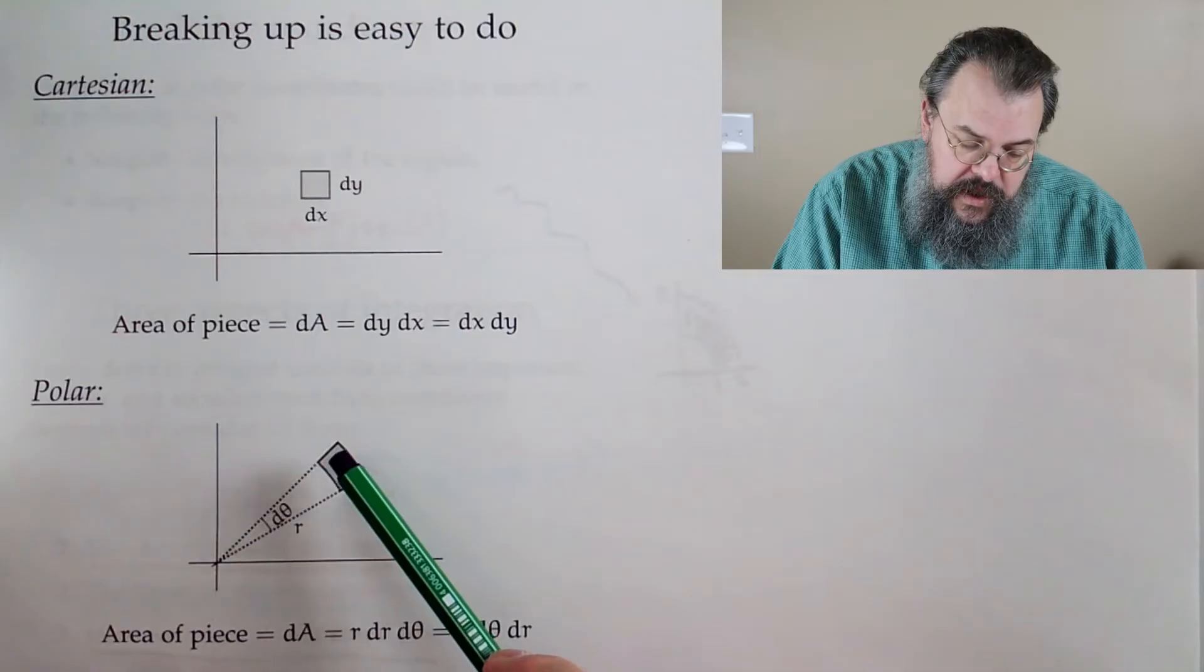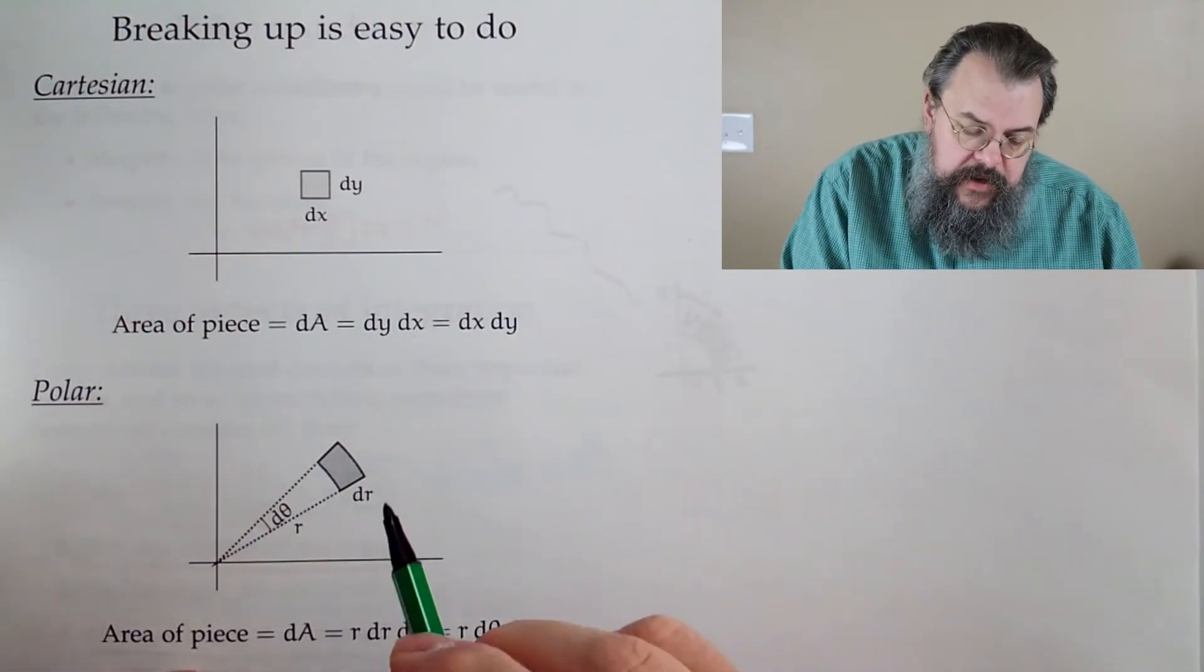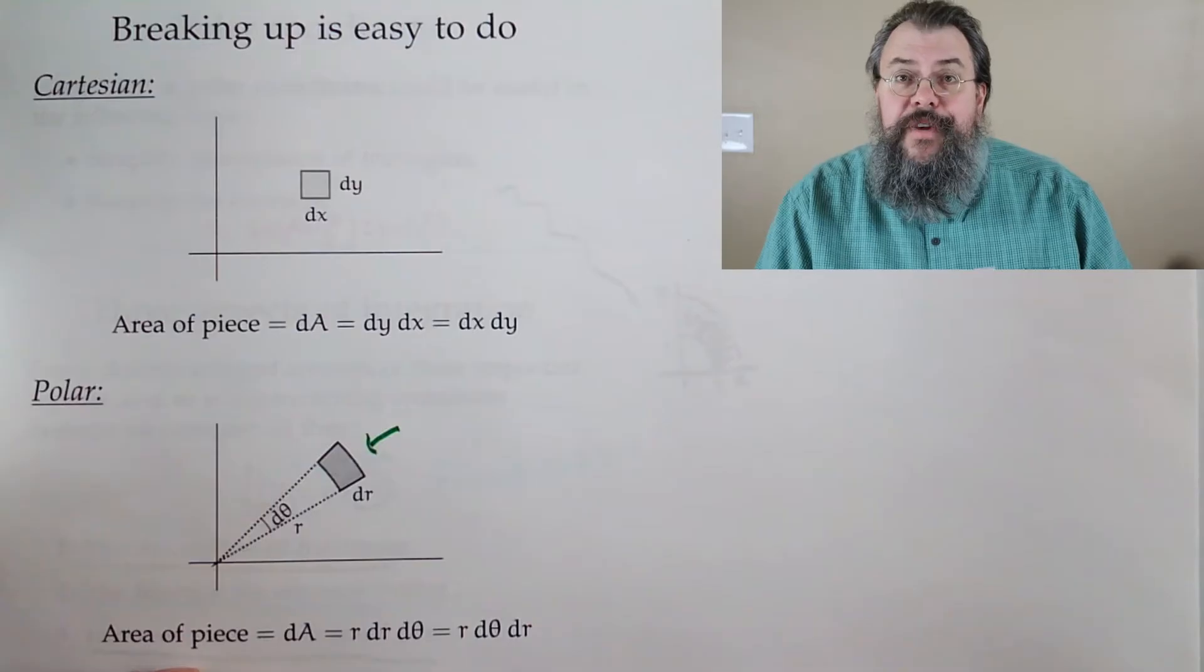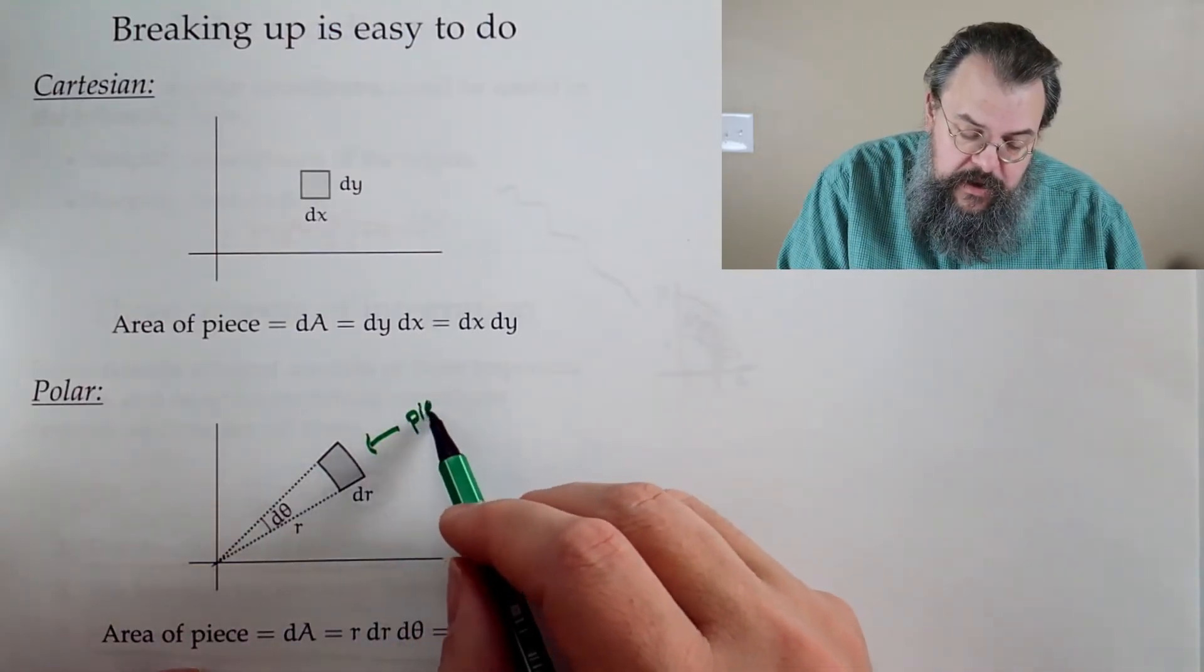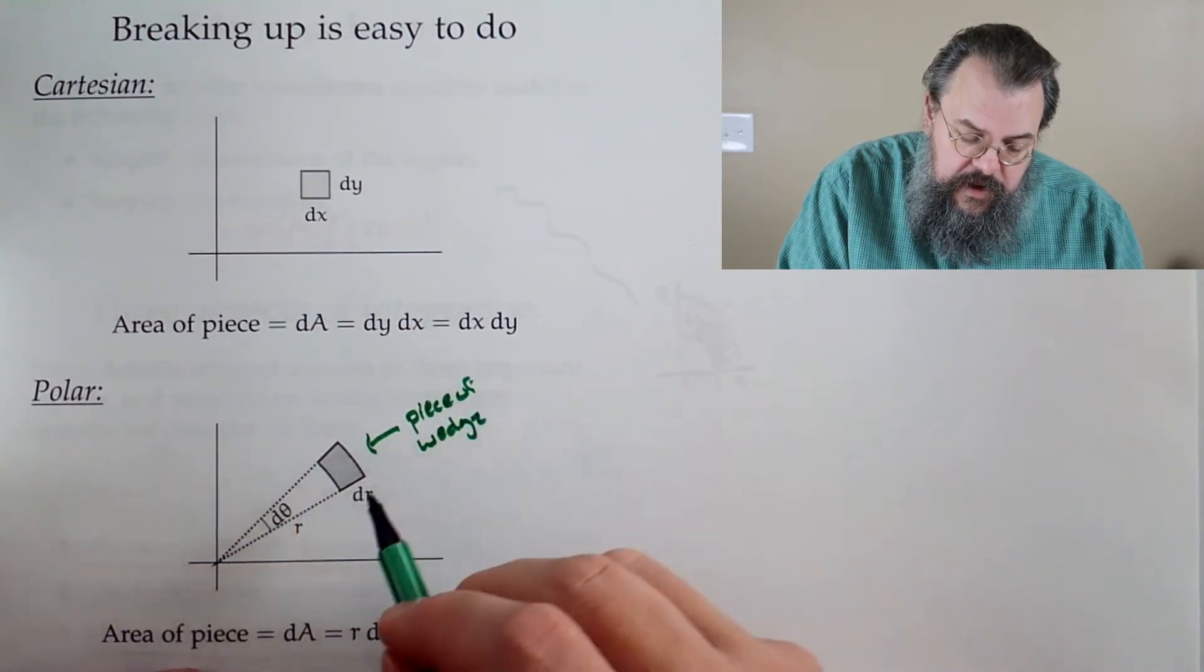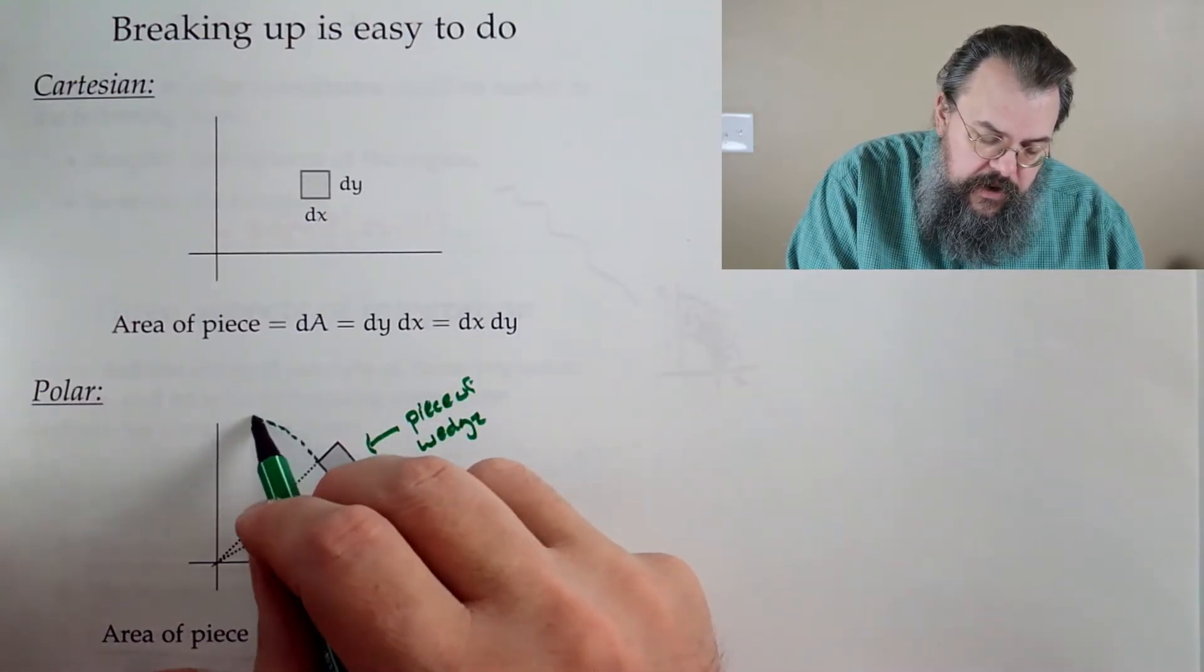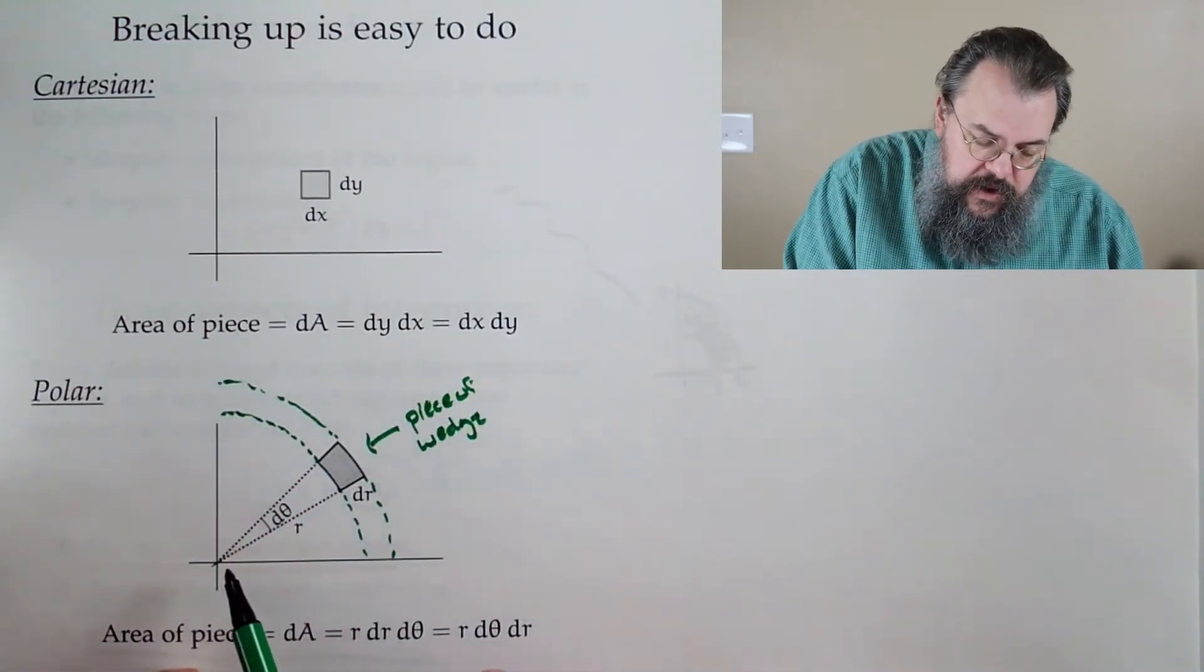Well, what you get is, it's not a rectangle, it's something a little bit different. This is like, if you like, this is the, well, it's like a pizza crust in some sense, right? But it's a piece of a wedge because what happens is if you look at this, it's like you took your circle here of radius r.